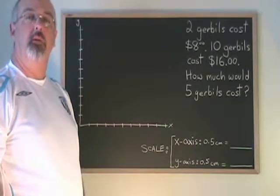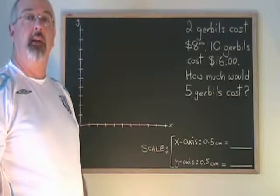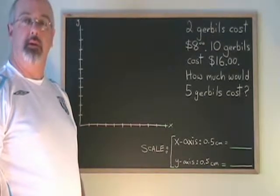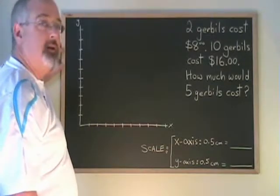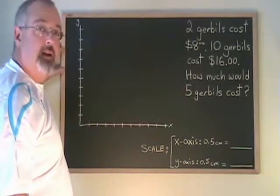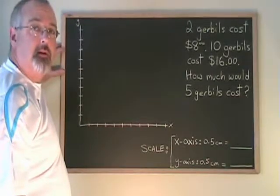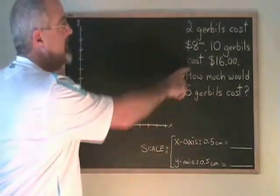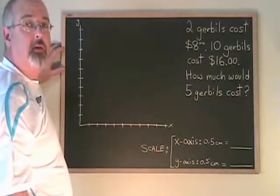In this problem, we are going to use the information given to graph a straight line, and then use the graph to answer questions. Our question says: 2 gerbils cost $8, 10 gerbils cost $16. How much would 5 gerbils cost? In there is the information that I need to put 2 points on my graph, and then I'll draw a line through them.